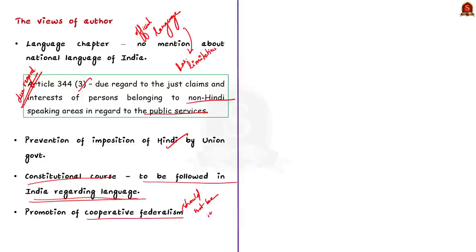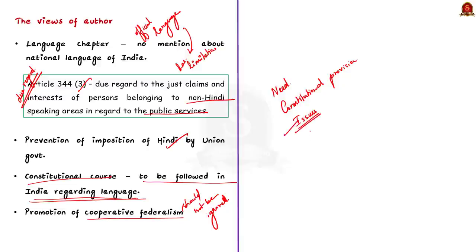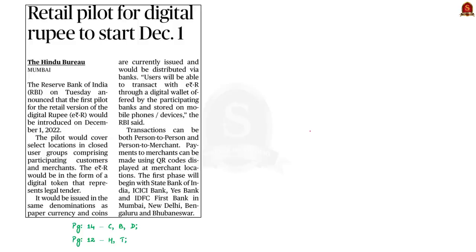That concludes this article discussion. We saw the need for language, important constitutional provisions regarding official language — Articles 343, 344, 345, the 8th Schedule, and Article 348 — and some of the issues mentioned by the author in the editorial article. Let us move on to the next article discussion.